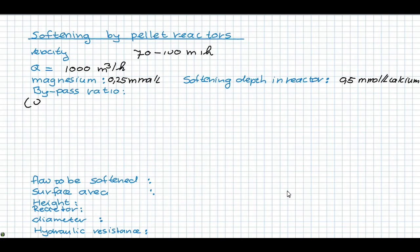So the total flow minus the bypass flow times the calcium concentration and magnesium concentration. And in addition, the bypass flow times the total hardness is the total flow times the aimed hardness.